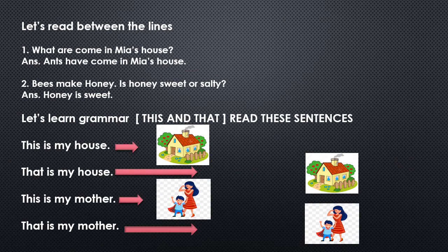Let's read between the lines. Question one: what are coming into Mia's house? Answer: ants have come into Mia's house. Question two: bees make honey — is honey sweet or salty? The answer is honey is sweet. If you have never tasted it, ask your mom to let you taste it and see whether it is sweet or salty. The answer is honey is sweet.